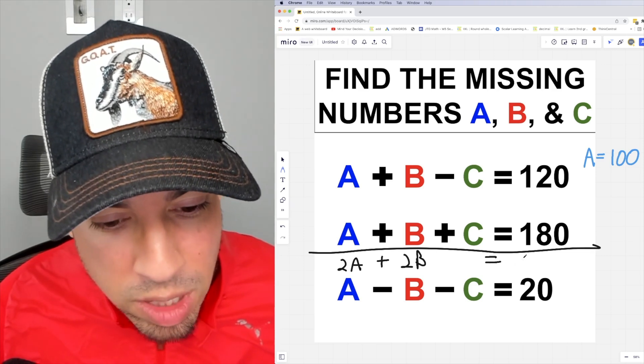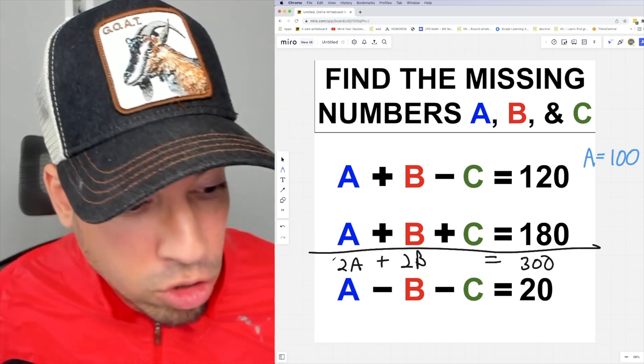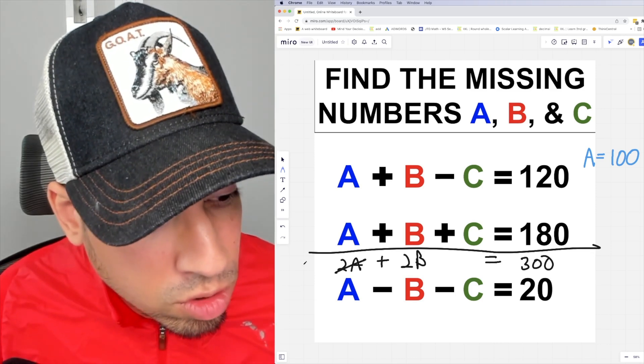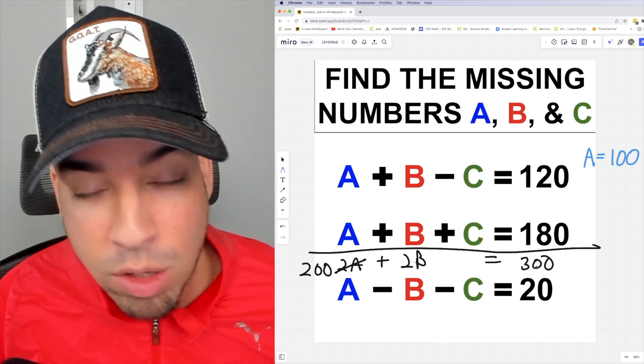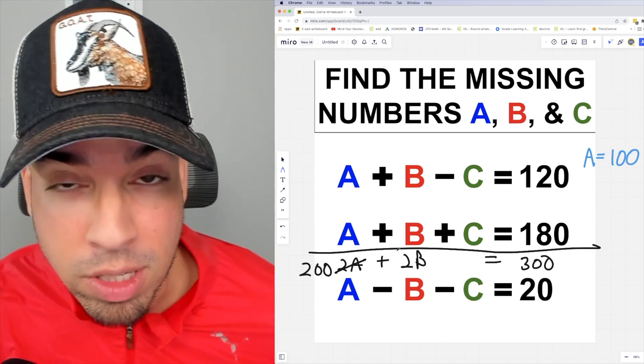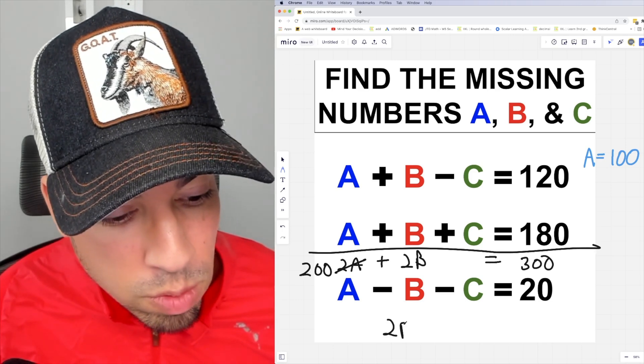And then 120 plus 180 is 300. Now I already know that A is 100, therefore 2A is 200. So 200 plus 2B equals 300. Using inverse operations, I can subtract 200 from both sides and I get 2B equals 300 minus 200, which is 100.